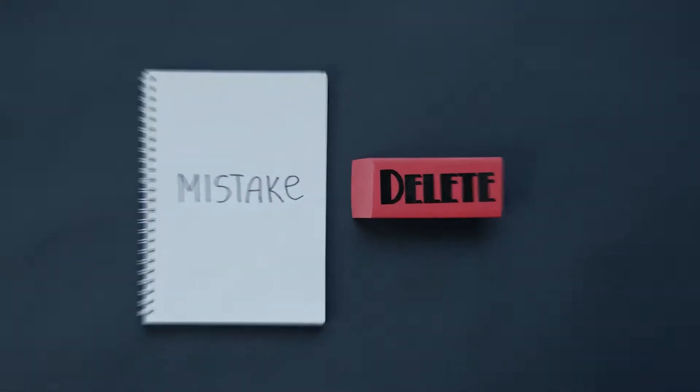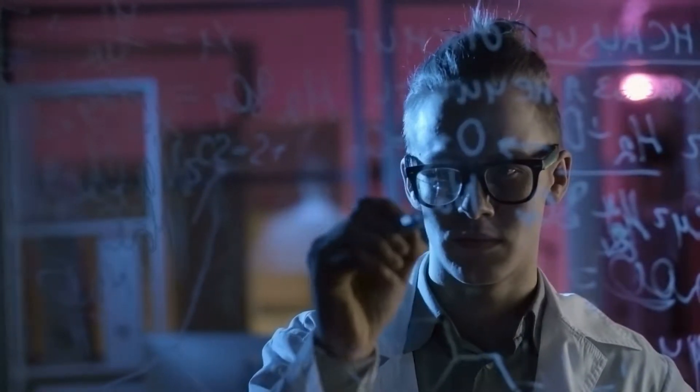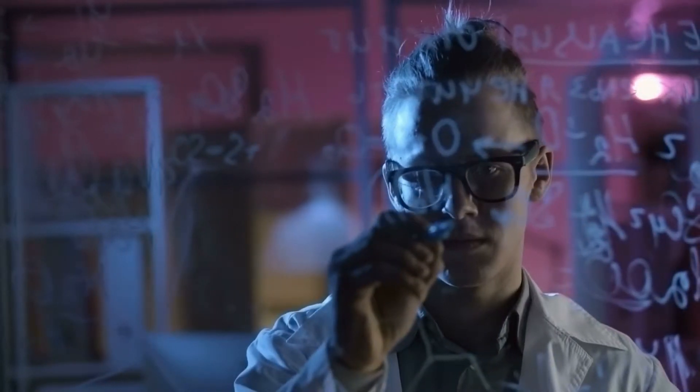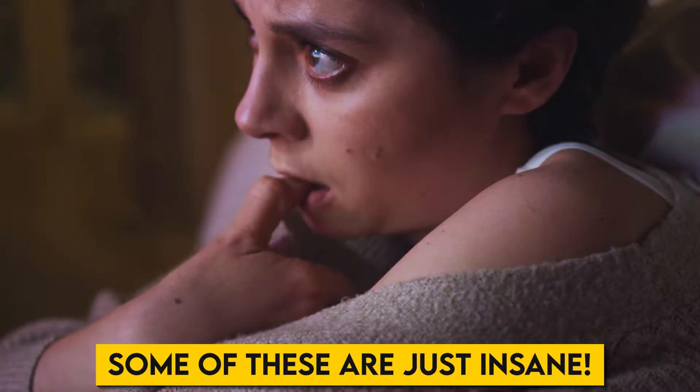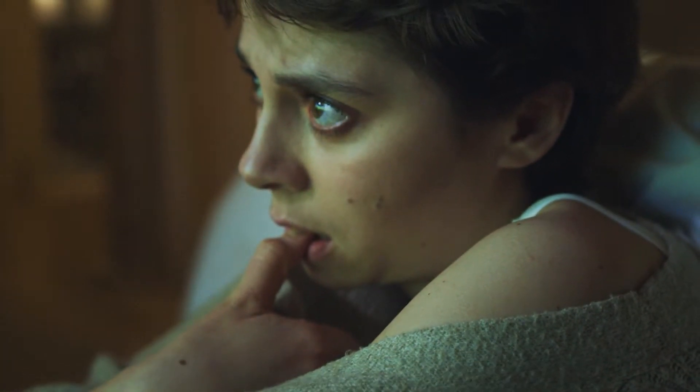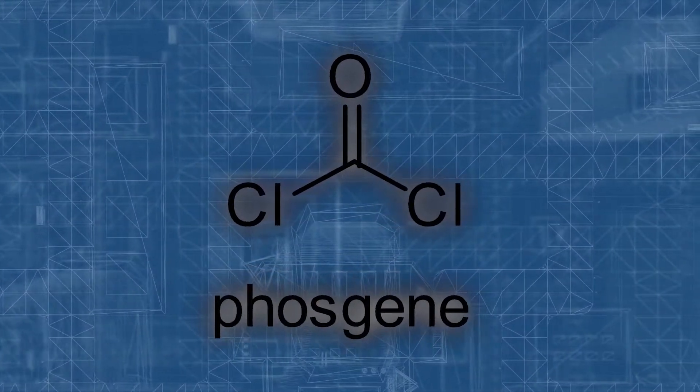Mistakes are an integral part of us humans. It was some mistakes and accidents that led to discoveries of certain things which were quite fruitful to us. However, some of these are just insane, and all they did was create chaos and cause harm to the people around. And one such incident happened with phosgene.